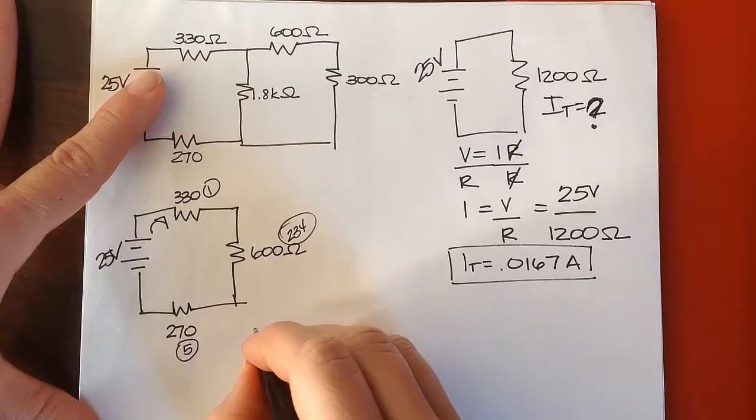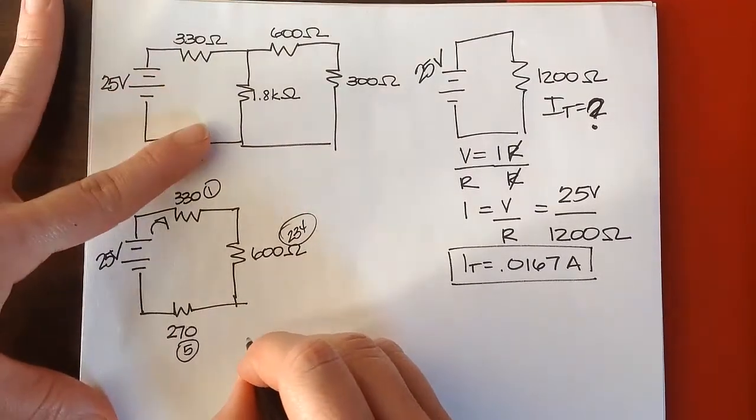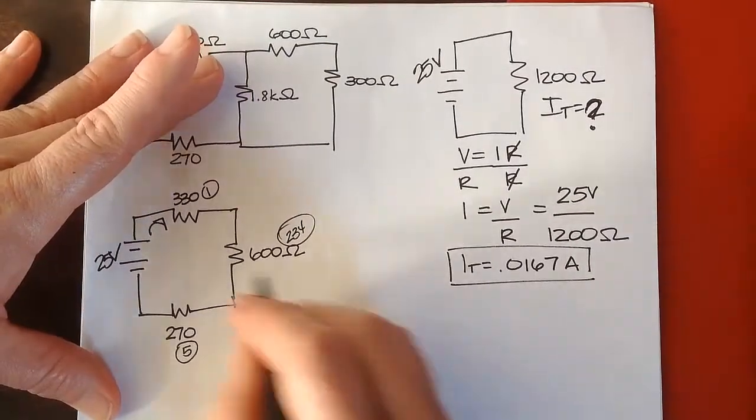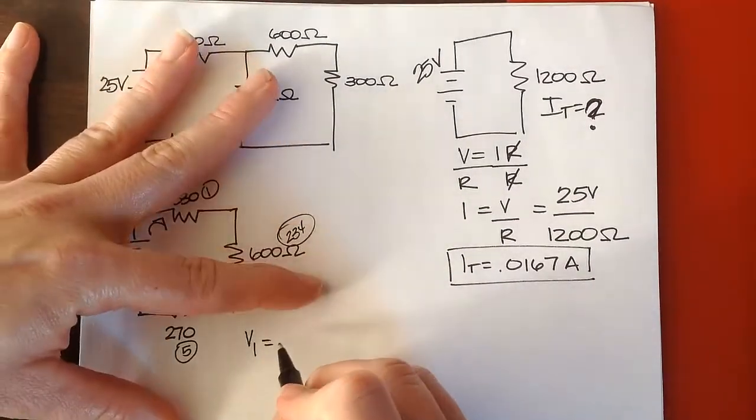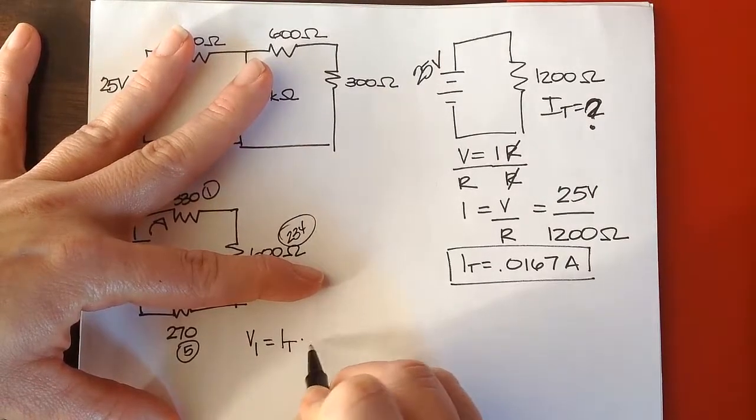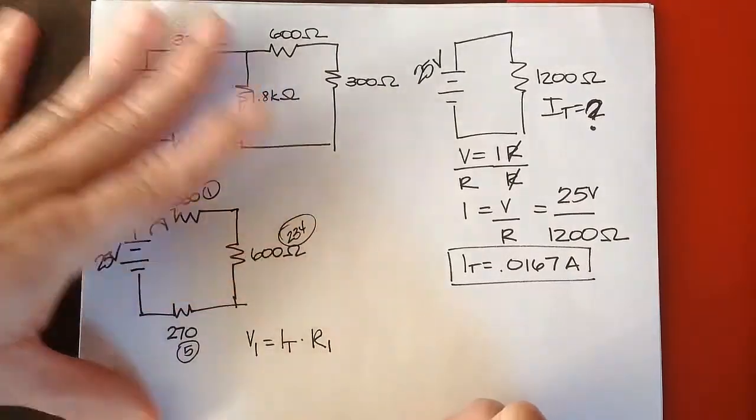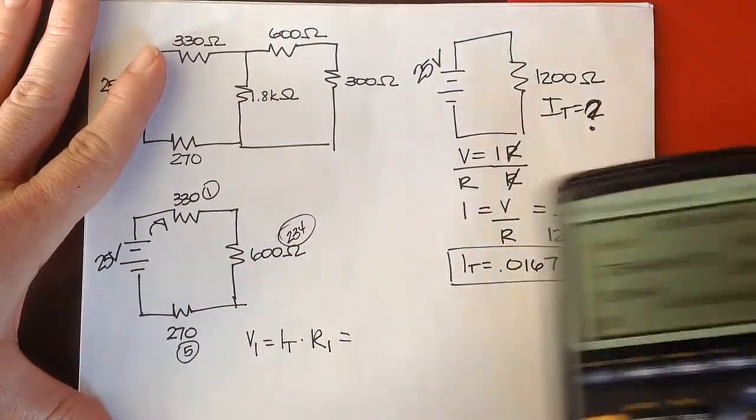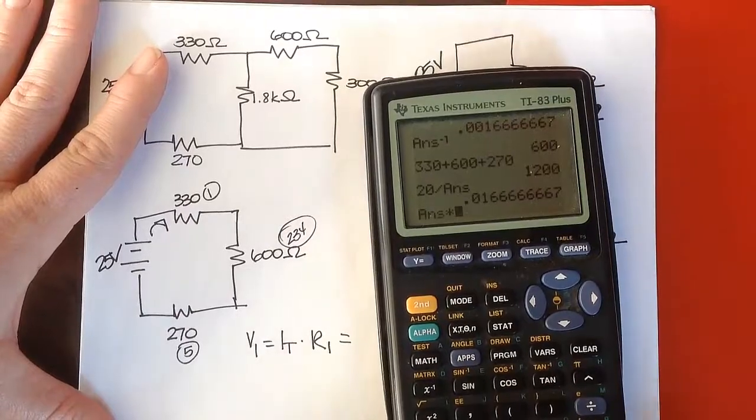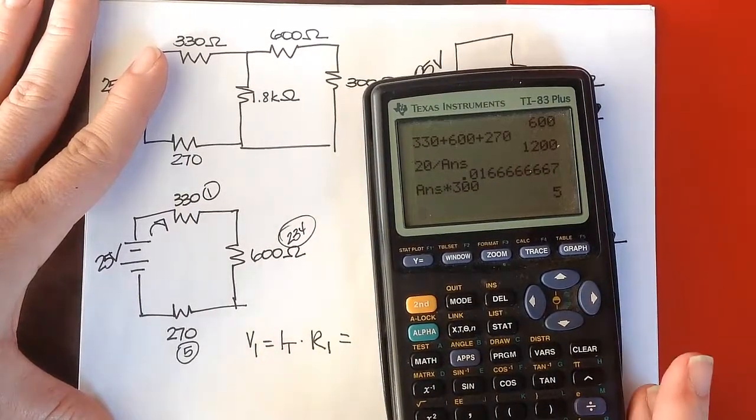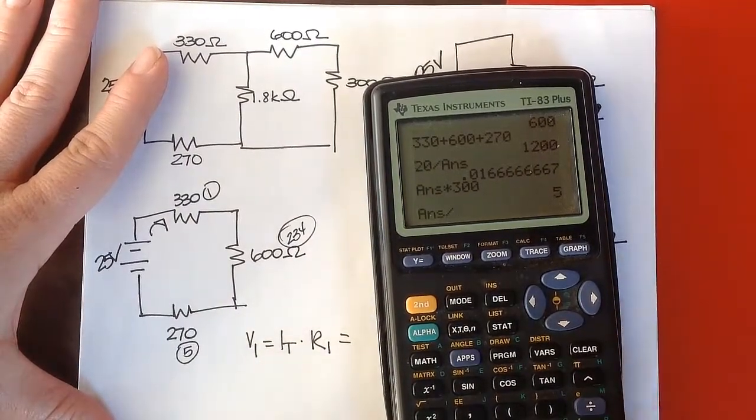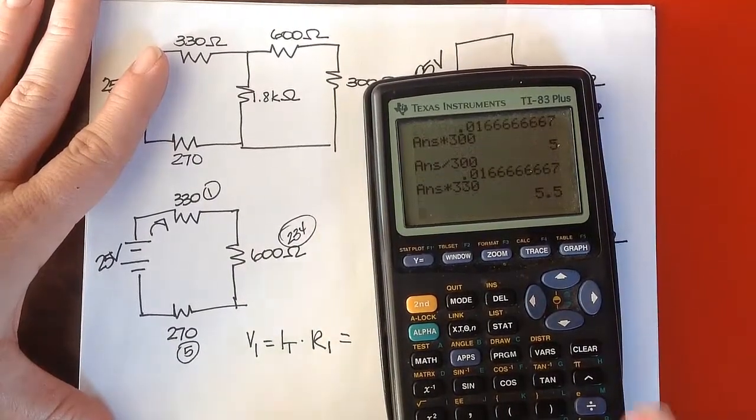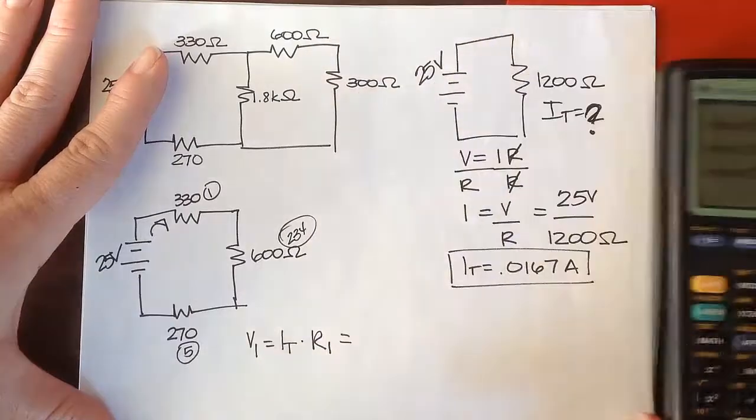So V1, the loss there, is going to be equal to, because all the current goes through that component, is going to be equal to IT times R1, and that's going to be equal to, we had our current before, and now I'm just going to multiply it by 330. And I get 5.5 volts.